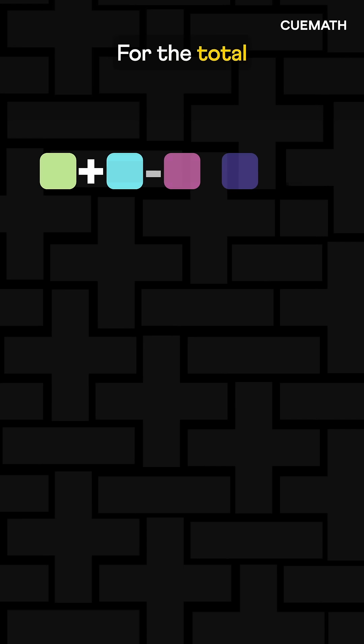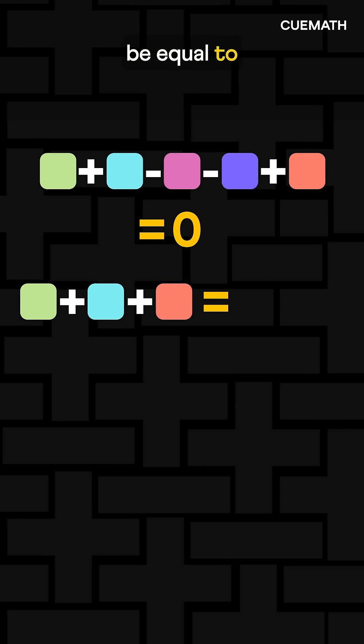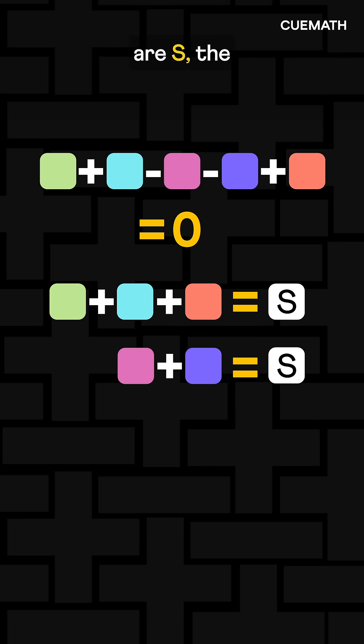Why? For the total to be 0, the sum of numbers with a plus sign must be equal to the sum of numbers with the negative sign. If both sums are S, the total is 2S, an even number.